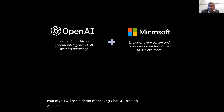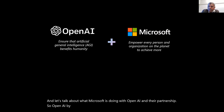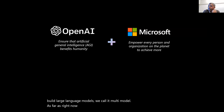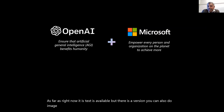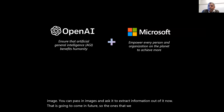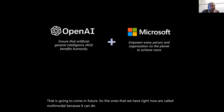Let's talk about what Microsoft is doing with OpenAI and their partnership. OpenAI is a separate company and their goal is to build large language models — we call it multimodal. Right now text is available, but there is a version where you can also pass in images and ask it to extract information. These are called multimodal because one model can do multiple tasks within the language model.